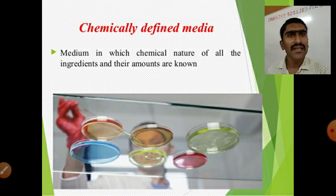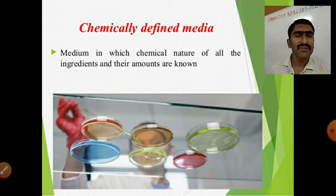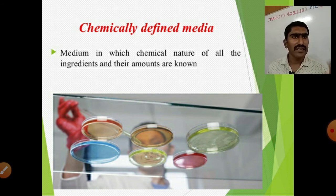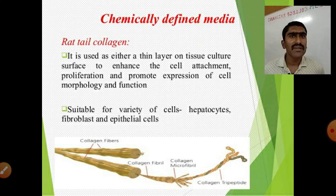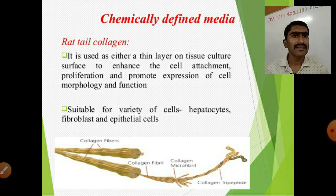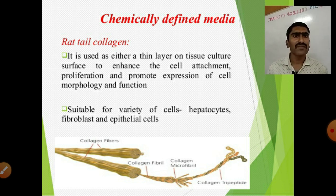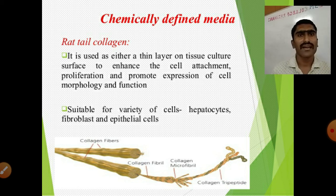Chemically defined medium is one in which the chemical nature of all ingredients and their amounts are known. Under chemically defined media, rat tail collagen is used as a thin layer on tissue culture surfaces to enhance cell attachment, proliferation, and promote expression of cell morphology and function. It is suitable for a variety of cells including hepatocytes, fibroblasts, and epithelial cells.